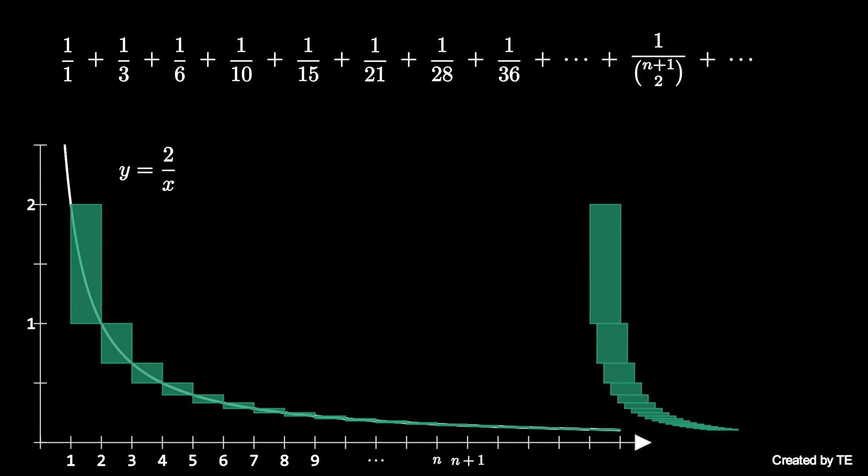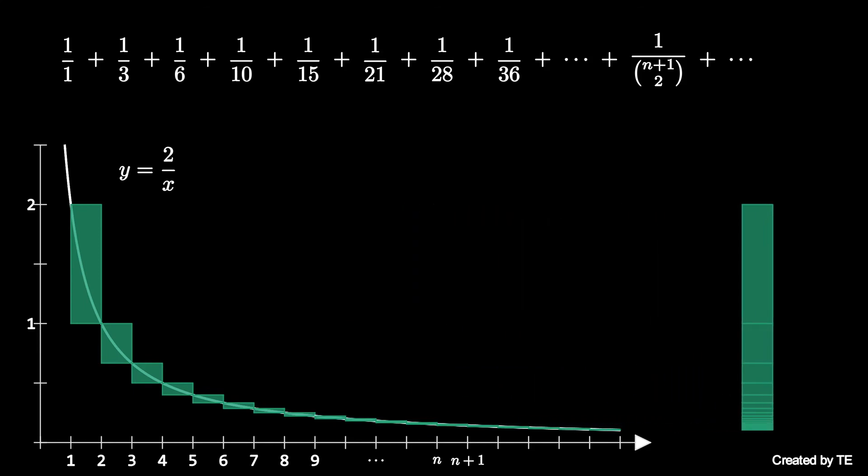If we continue our sum infinitely, we will fill this rectangle completely. The resulting rectangle has width 1 and length 2, so the series of reciprocals of triangular numbers converges to 2.